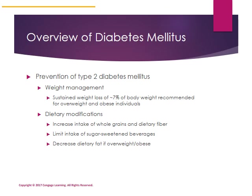The prevention of type 2 diabetes mellitus is imperative. If you can't prevent it, you can put it into remission by following weight management guidelines and diet modification. A sustained weight loss of about 7 percent of body weight is recommended for overweight or obese individuals. Dietary modifications include increasing intake of whole grains and dietary fiber — dietary fiber helps stabilize blood sugars. Decrease the amount of sugar-sweetened beverages consumed, and consume less than 10 percent of total calories from added sugars.